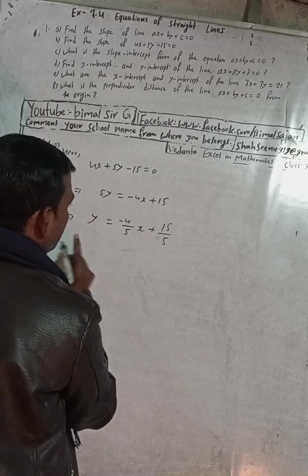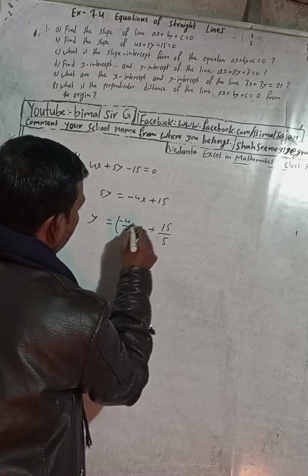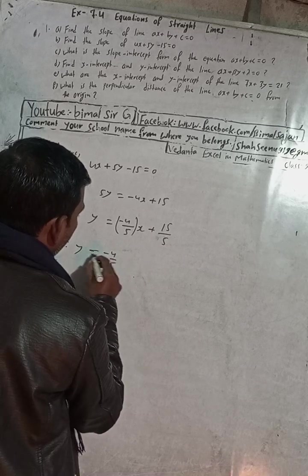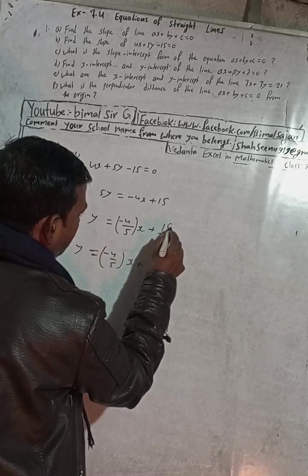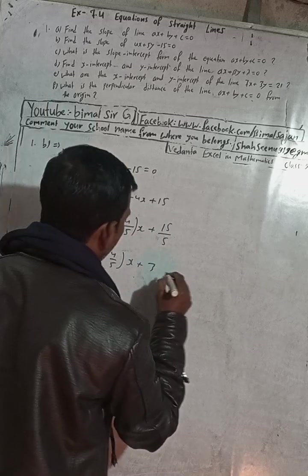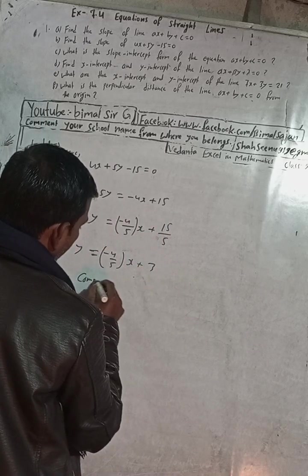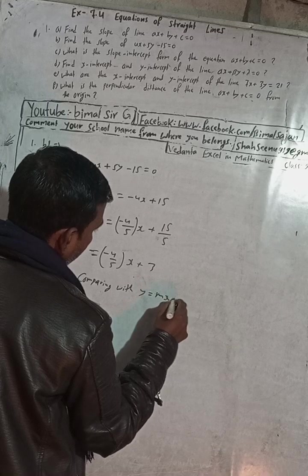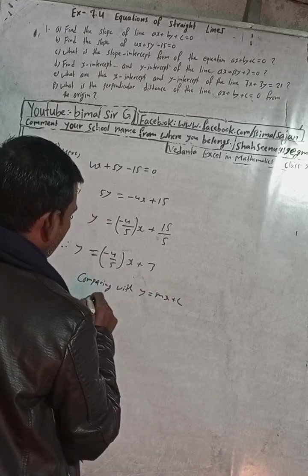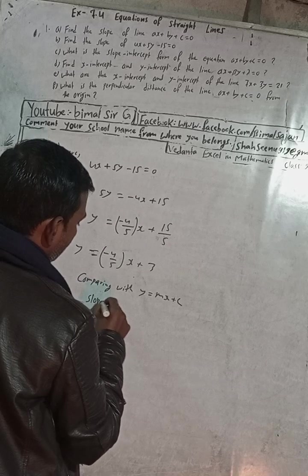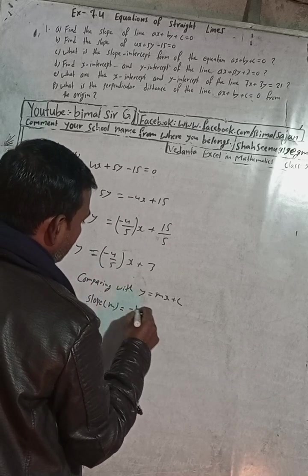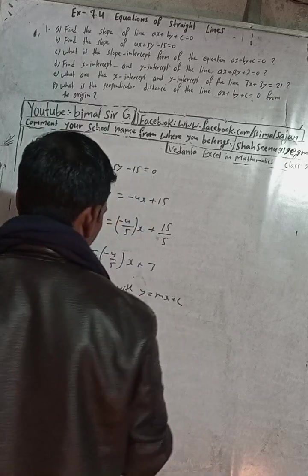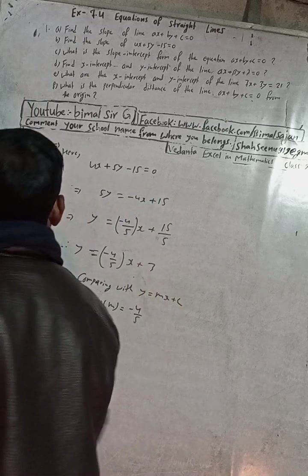This is now in the form y = mx + c. Comparing, the slope is -4/5, and 15 divided by 5 is 3, so the intercept is 3. The answer in the book is also -4/5. Now part (c).